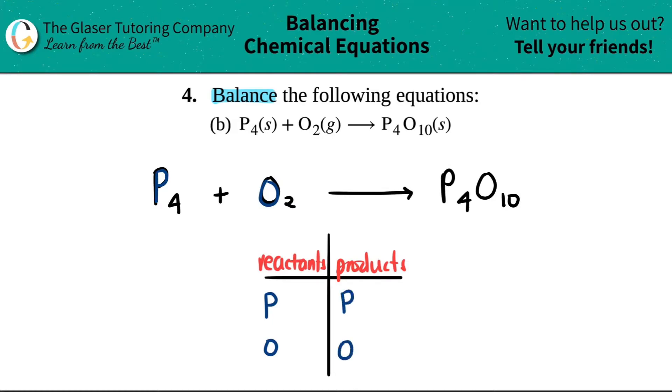So law of conservation of mass says, basically if you have your elements on the reactant side, the same elements have to be on the product side. And now let's just say how many we have. I have four phosphorus. So I have to write a four here. I have two oxygen. So I put a two here. And then going to the product side, I have four phosphorus. And then I have 10 oxygen. So I write those numbers down.